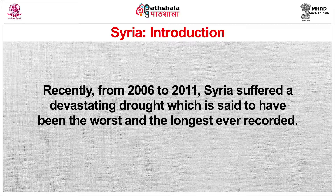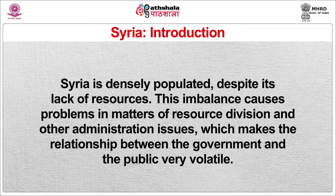From 2006 to about 2011, Syria suffered a devastating drought which is said to have been the worst and the longest ever recorded. Syria is densely populated despite its lack of resources. This imbalance causes problems in matters of resource division and other administrative issues, which make the relationship between the government and the public extremely volatile in modern day Syria.